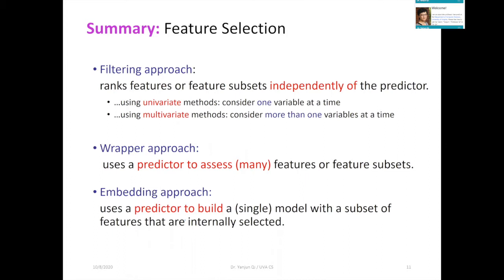We can group feature selection methods into three different families: filter-based, wrapper-based, and embedding-based. The filter-based approach is the most simple, classic feature selection — the essence is to rank the features or feature subsets independently of the predictor you use in the downstream task. You can rank each variable at a time, for example using variance, or rank feature subsets and compare them.